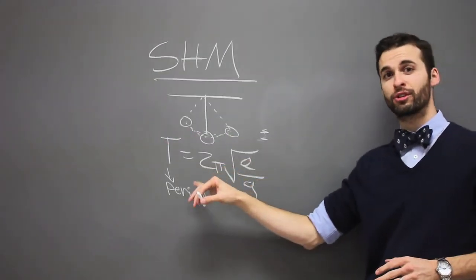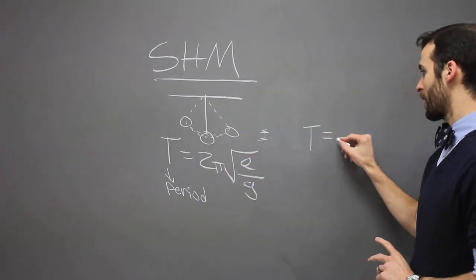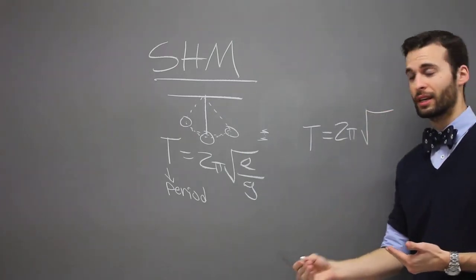Here we have simple harmonic motion for a pendulum. For a spring, the period of oscillation is very similar, but depends upon different things. It is mass divided by the spring constant.